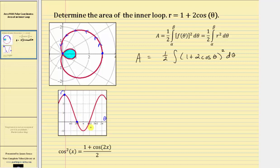Now looking at the piece of the curve below the horizontal axis, this is the piece of the curve that traces out the inner loop. Notice how r is negative over the interval from two thirds pi radians to four thirds pi radians, which means the point is plotted in the opposite direction. For example, this point here has r equal to negative one and theta equal to pi radians. So the terminal side of pi radians is to the left, but because r is negative one, we plot the point one unit in the opposite direction, which is here. So orientation continues in this direction, tracing out the inner loop.